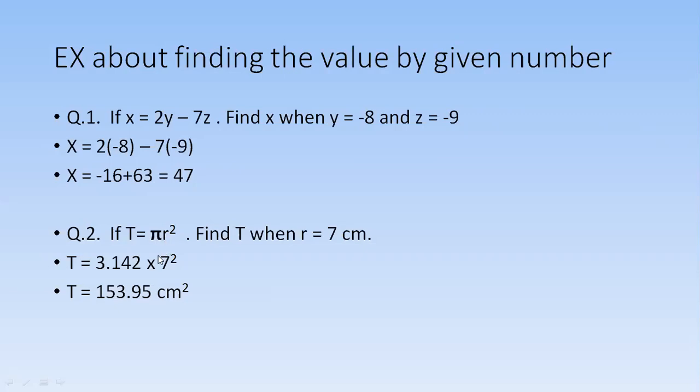And you will put that value 7 into r. In fact, I haven't put the value in the bracket, but you have to. It becomes 7 square, 49, and when 49 will be multiplied by 3.142, it will become 153.95 square centimeter. Actually, this is the area of something. That's why I have put power 2 on cm.